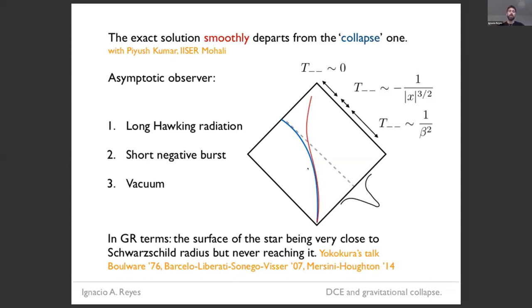So this is what the solution looks like. It's a solution that sort of smoothly departs from the collapsing one. This is work with Piyush Kumar, who's an undergraduate from Mohali. So here we have the Fuling Davis one in blue, and this is the exact back-reacted solution, which departs at some time from this other one. So what does an asymptotic observer see? Well, for a long time, they just see Hawking radiation. Then they see a short burst of negative energy. And then essentially, they see the vacuum forever. So in GR terms, this would resemble, just to do the analogy, a surface of the star, which comes closer and closer to the Schwarzschild radius, but it never reaches it. We've also heard some ideas about this early on during this week.